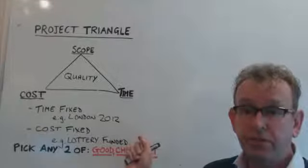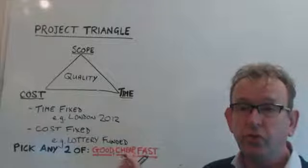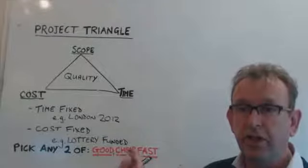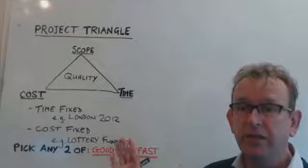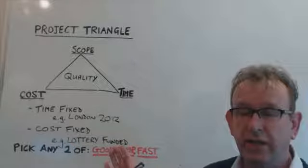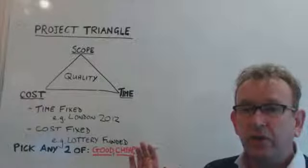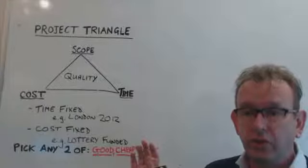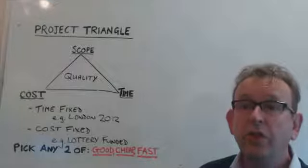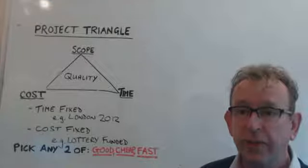Some projects are fixed by time. For example, all the London 2012 Olympic projects had a certain date by which they must deliver, and no matter what happened those projects could not deliver late. It's very useful to understand which side of your triangle is fixed at the beginning when you're setting out the project plan.